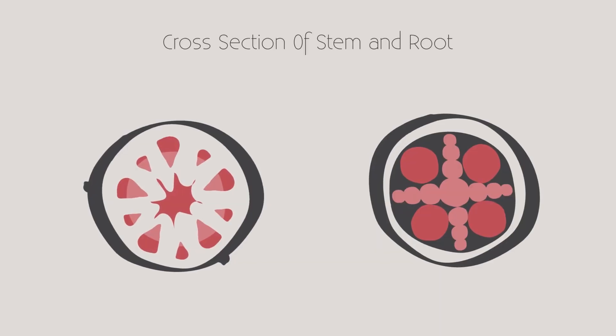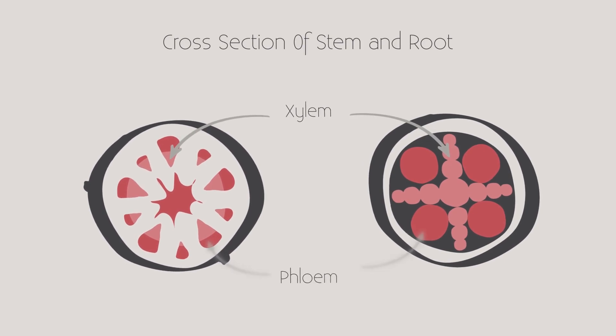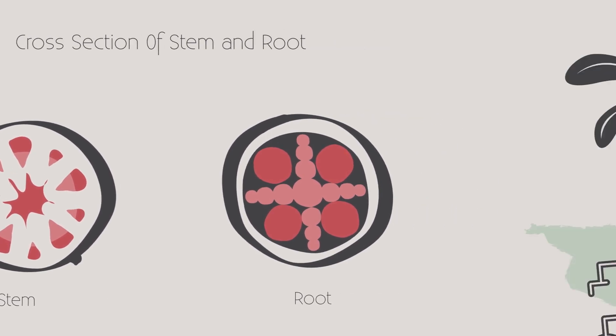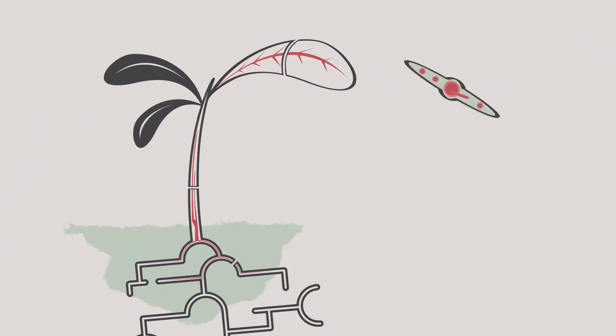Here is the xylem and here's the phloem. Notice how the arrangement is different in the stem and the root. The xylem and phloem are found in groups called vascular bundles, and the position of these bundles change for different parts of the plant.